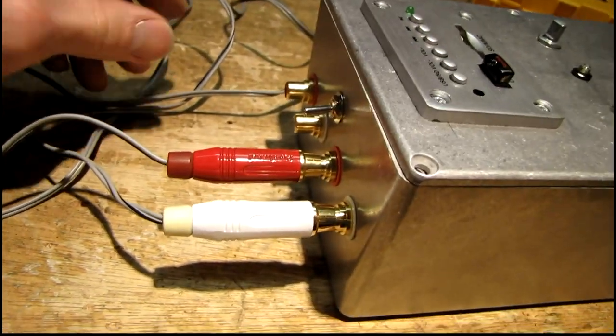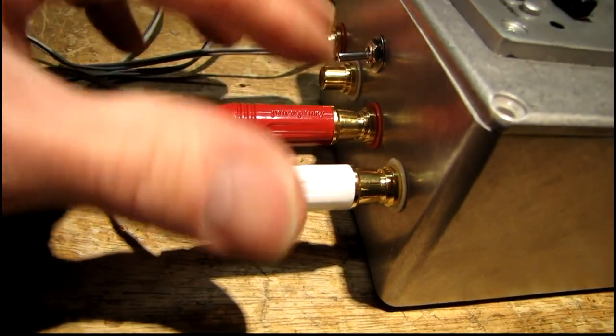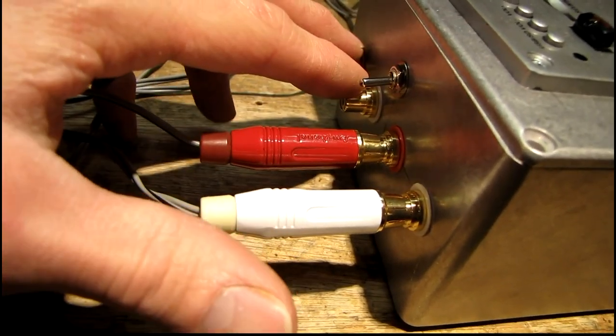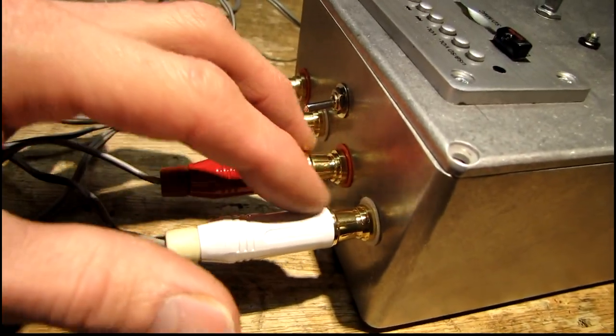Flip that toggle switch there to select whether you're using standard 4 to 16 ohm speakers or over here for 70 volt speakers, and you just move these plugs over to that. I did it that way so that it couldn't be mixed up.